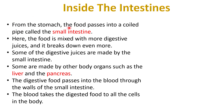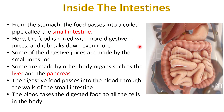Now let's talk about what happens inside the intestine. From the stomach, the food reaches a coiled pipe called the small intestine, as we can see in this image. Here the food is mixed with more digestive juice and it breaks down even more. Some of the digestive juice is made by the small intestine and some are made by other body organs such as the liver and the pancreas. The digested food passes into the blood through the walls of the small intestine, and the blood takes this digested food to all the cells in the body.